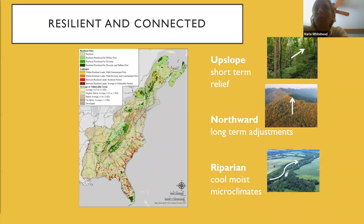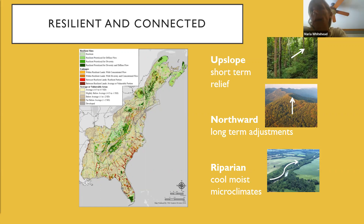With climate change, there will be a tendency for upslope movement of organisms, for northward latitudinal movement, for long-term adjustments, and also for movement along riparian corridors that offer cooler and moister habitats in the face of climate change.